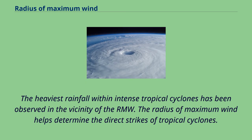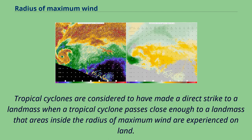The heaviest rainfall within intense tropical cyclones has been observed in the vicinity of the RMW. The radius of maximum wind helps determine the direct strikes of tropical cyclones. Tropical cyclones are considered to have made a direct strike to a landmass when a tropical cyclone passes close enough that areas inside the radius of maximum wind are experienced on land.